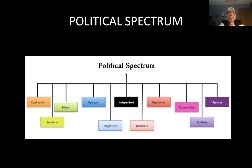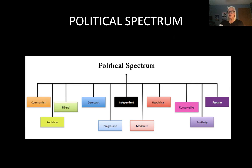So to recap: independent is down the middle. The left means progressives, Democrats, liberals — with socialism and communism moving further to the extreme left. The right means Republicans and conservatives — with Tea Party and fascism at the further extreme right. We really do exist within the context of Democrats and Republicans, progressives, moderates, liberals, and conservatives. That's really where we live, but there are definitely these other extremes.